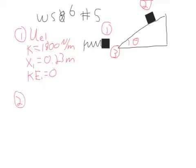At point two, this is when it is stopped, so again our kinetic energy is still zero. That's nice. Our potential energy elastic is zero, but now we have gravitational potential energy which is going to be equal to mgh.